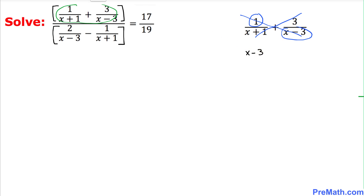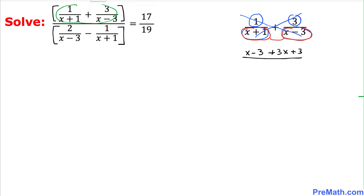Now let's do the other way around and multiply 3 times x plus 1. That is going to give us plus 3x, and then 3 times 1 is 3. Divided by, let's focus on these two denominators: x plus 1 and x minus 3. Let's multiply them out, so that gives us x plus 1 times x minus 3.